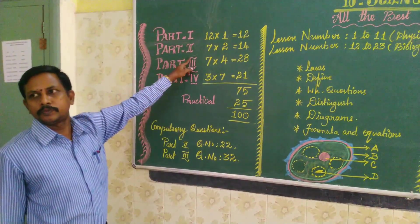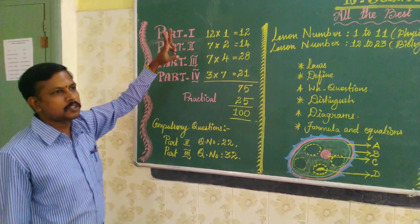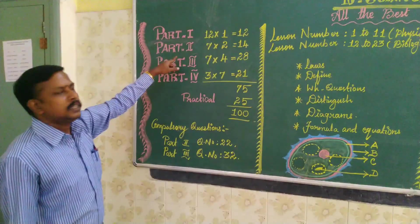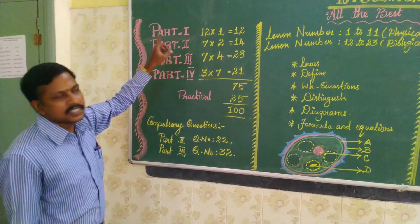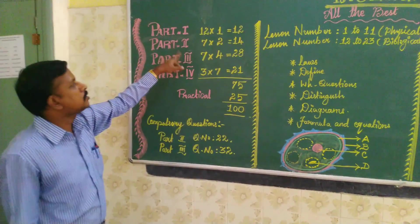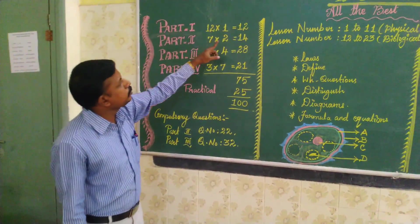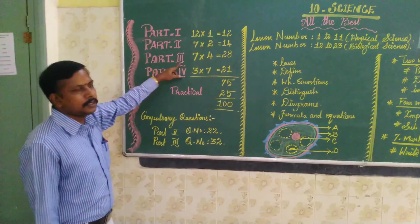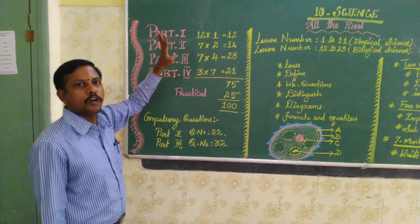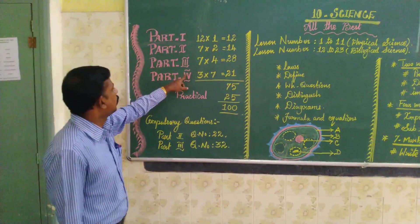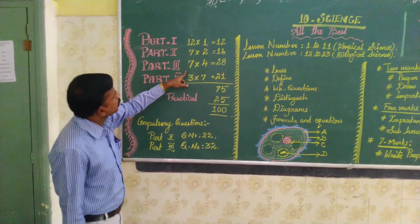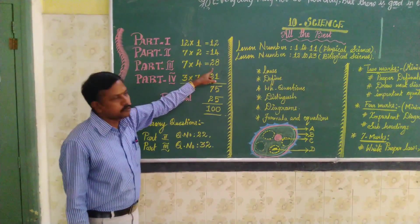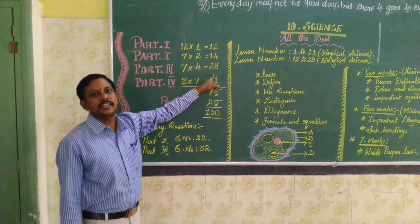Then Part 2: 2-marks questions. In this, you have to write 7 questions. So 7 into 2 equals 14 marks. And Part 3: 4-marks questions. In this, you have to write 4 questions. So 7 into 4 equals 28.